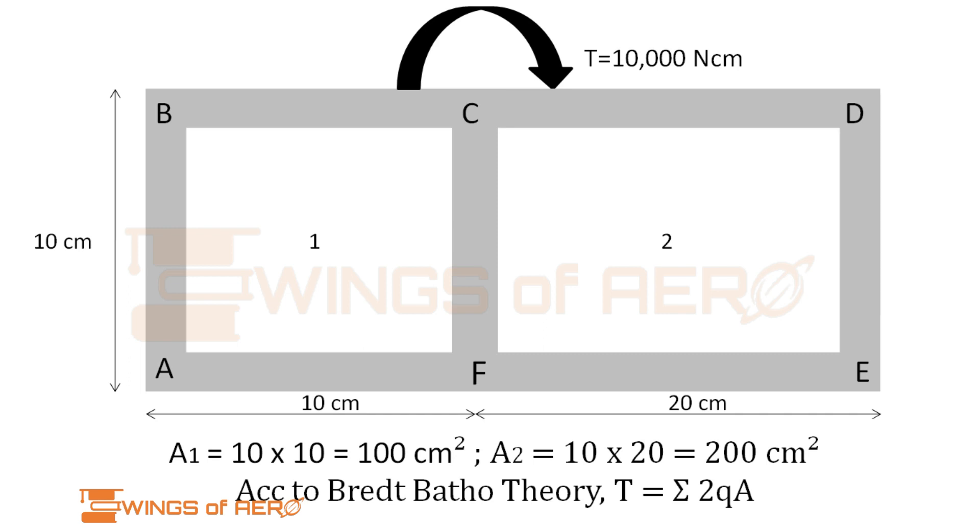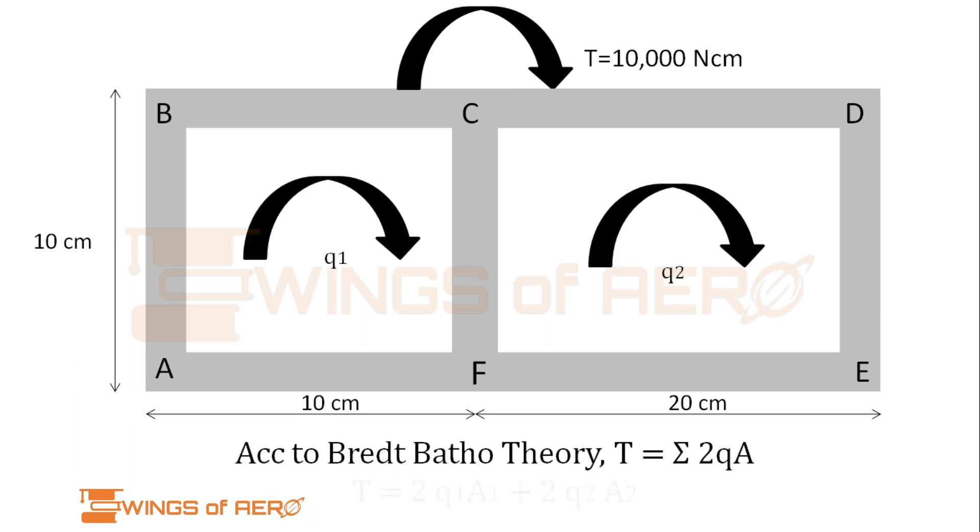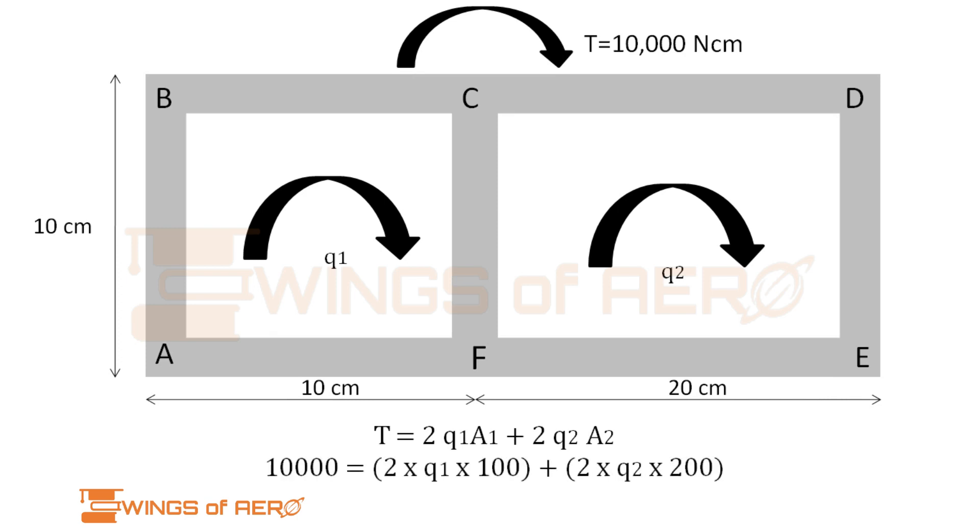Now let's recall the Bredt-Batho theory. According to multi-cell cross-section, we know that T equals summation of 2qA. This can be written as T equals 2q1A1 plus 2q2A2. Substituting values: 10,000 equals 2 into q1 into 100 plus 2 into q2 into 200. Simplifying, we get q1 plus 2q2 equals 50. Let's name this equation number 1.